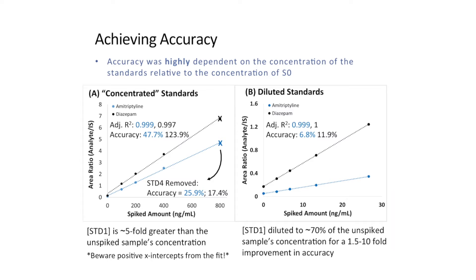It was noted during method development and validation that the accuracy was highly dependent on the concentration of the standards relative to the concentration of the target analyte in the unspiked S0 sample. To illustrate this, I'm showing standard addition curves using what I call concentrated standards versus diluted standards. With concentrated standards, standard one was five-fold greater in concentration than the target analyte in the unspiked sample.